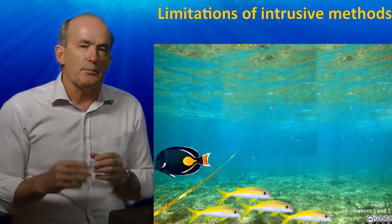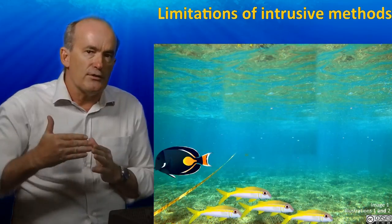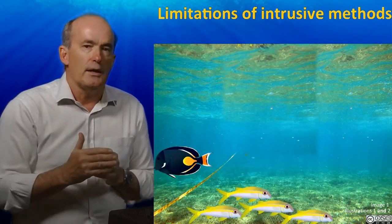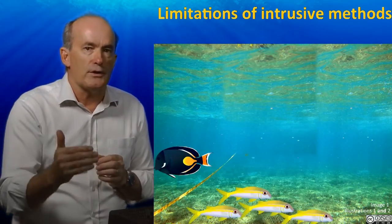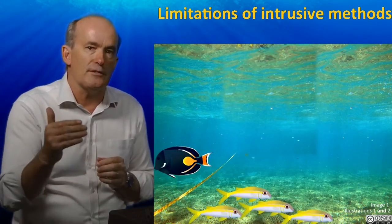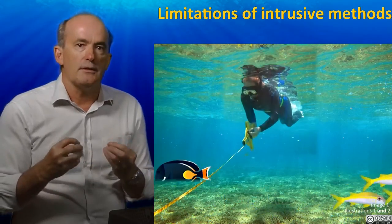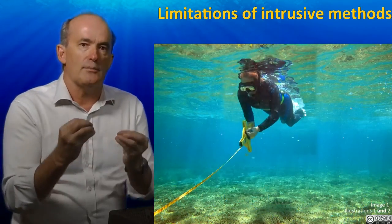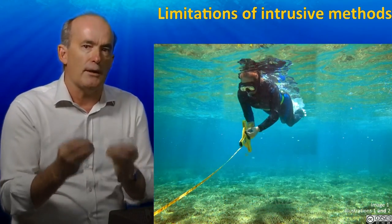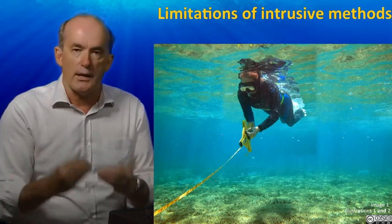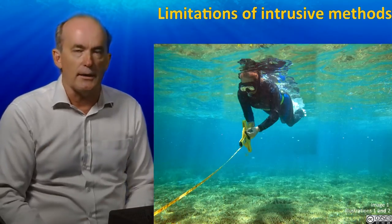The first is that the presence of divers swimming along the reef crest can cause fish to hide or disappear from the transect, leading to much lower estimates of fish abundance and diversity than there actually may have been.